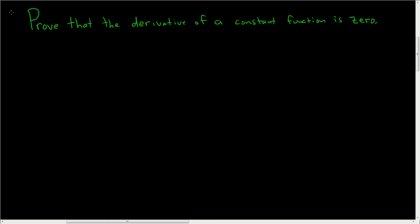We're being asked to prove that the derivative of a constant function is zero. Let's go ahead and do it, so proof. We'll start by saying that we have a constant function, so let f of x be equal to c where c is constant.